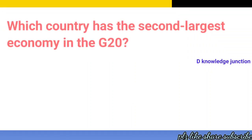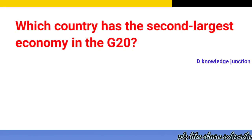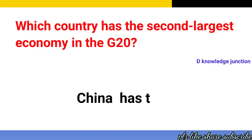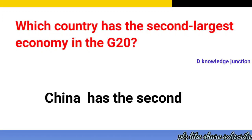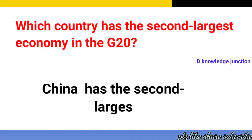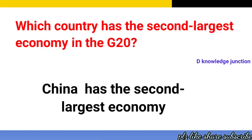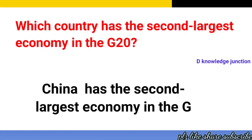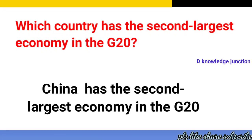Which country has the second largest economy in the G20? The correct answer is China. China has the second largest economy in the G20.